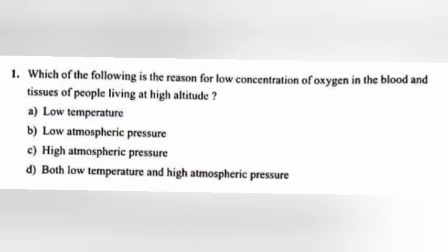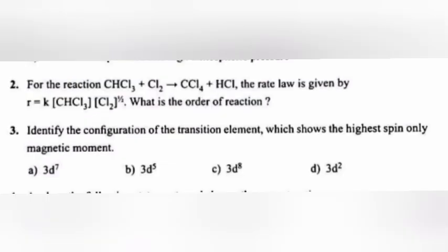Question 1: Which of the following is the reason for low concentration of oxygen in the blood and tissues of people living at high altitude? Answer B: Low atmospheric pressure.